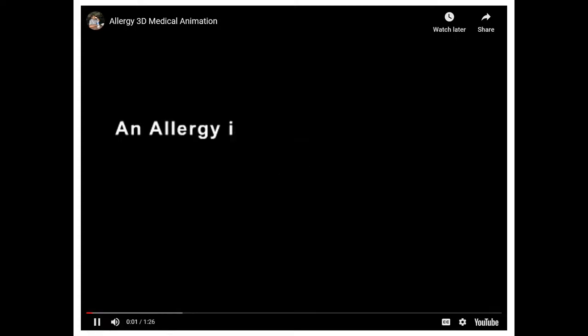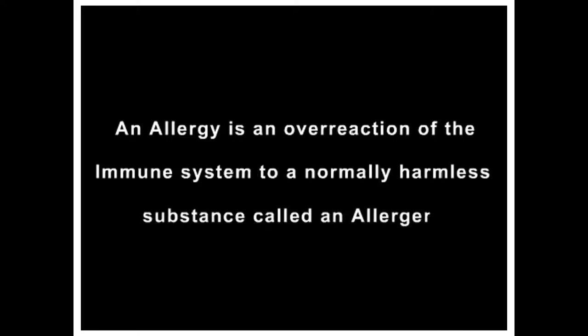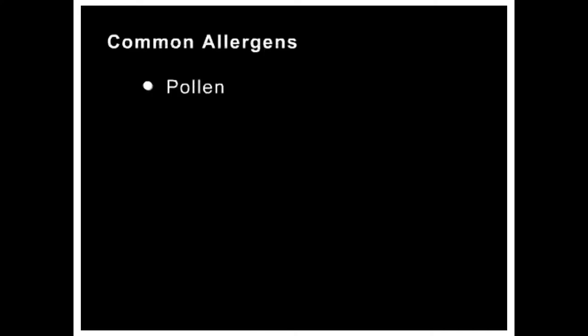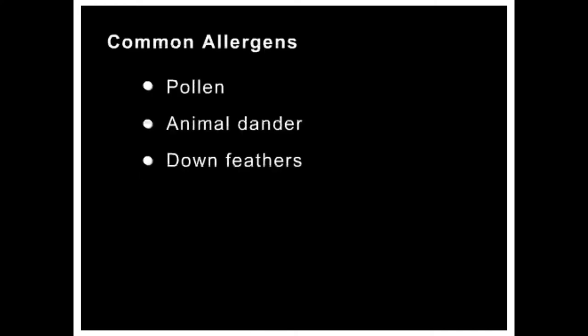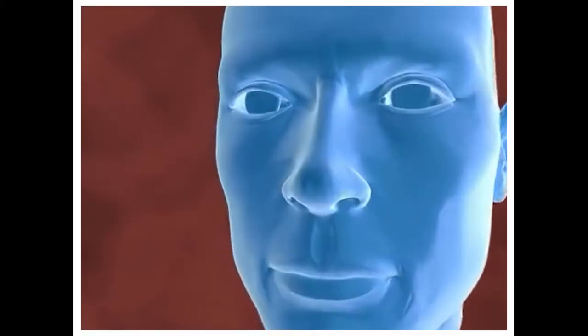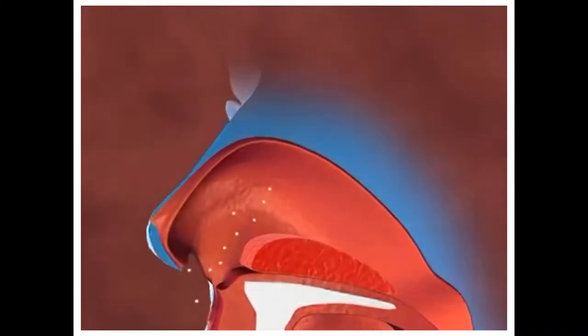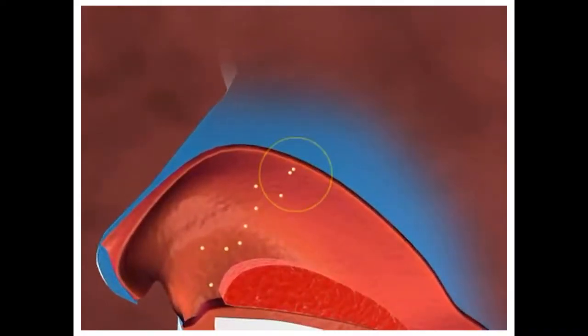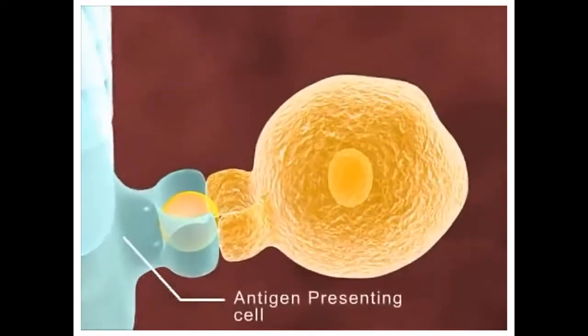An allergy is an overreaction of the immune system to a normally harmless substance called an allergen. Common allergens include pollen, animal dander, down feathers, mites, chemicals, and a variety of foods. On first exposure, the inhaled allergen enters the mucous membrane lining the nasal passages where it is taken up by the antigen-presenting cell, which presents it to the T cells.